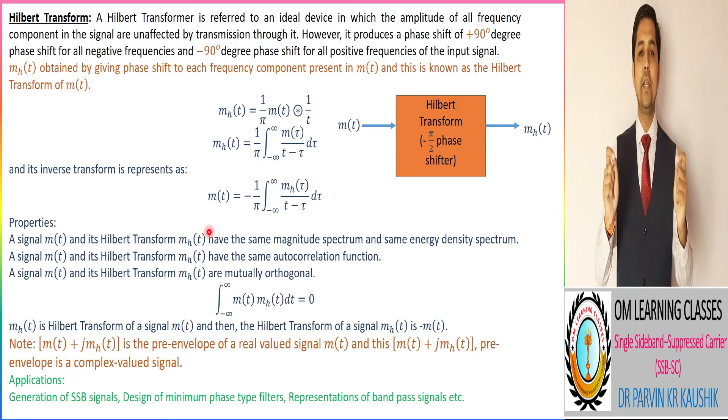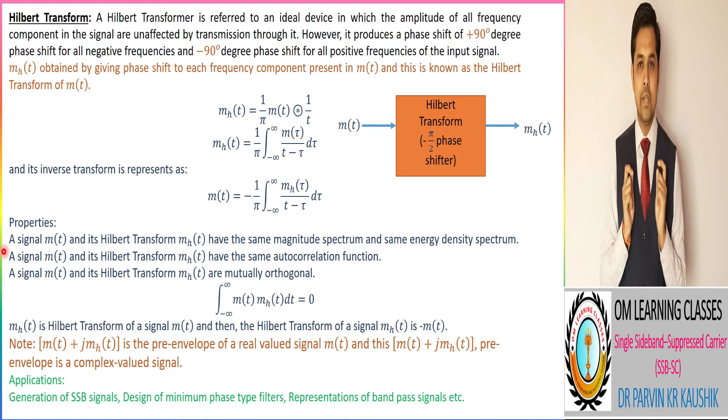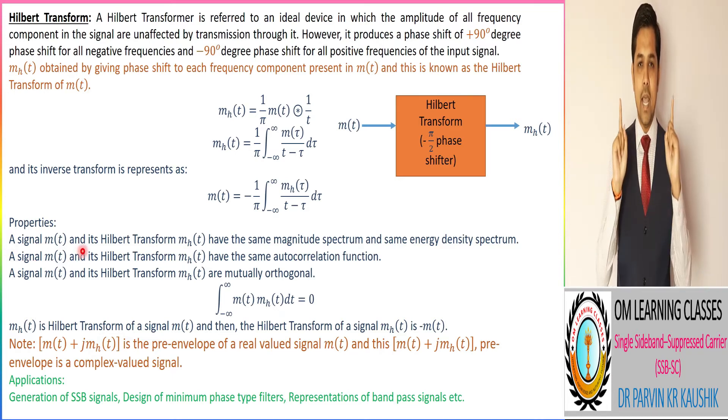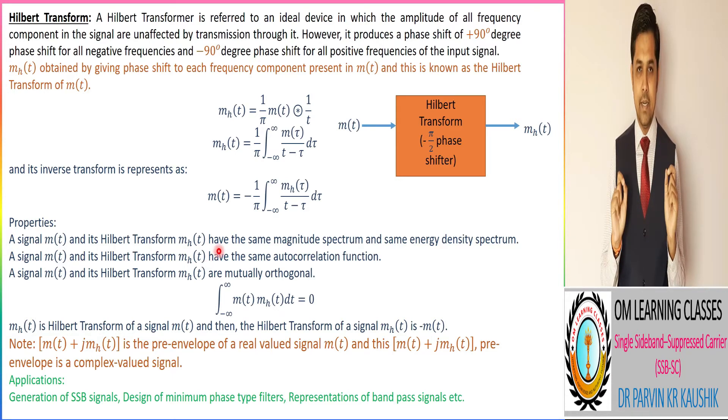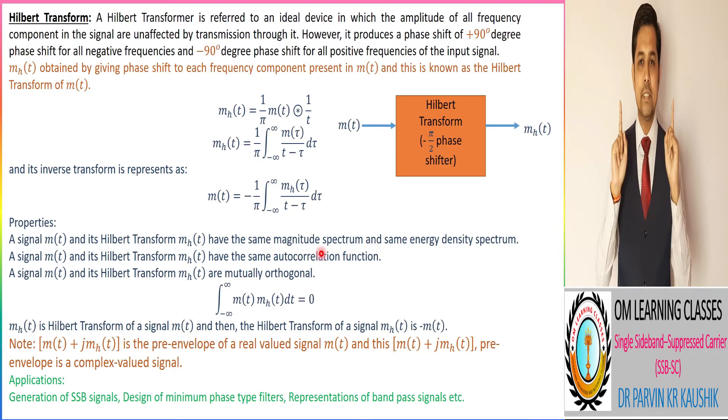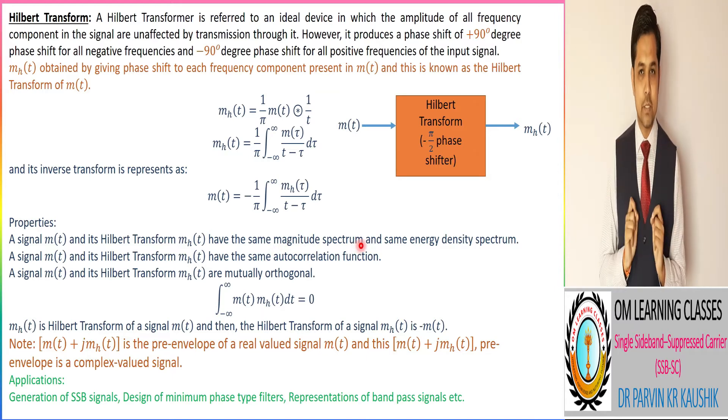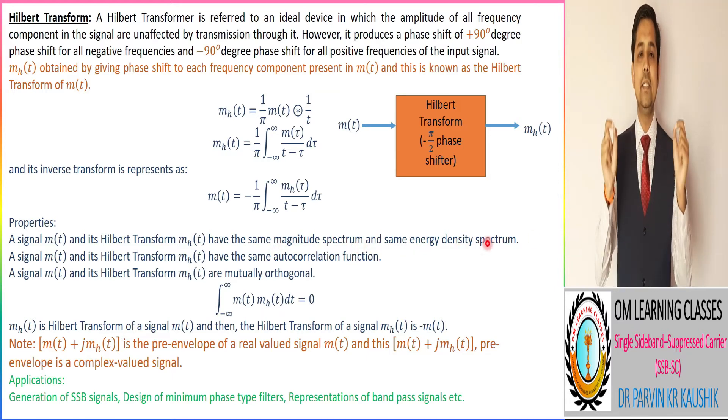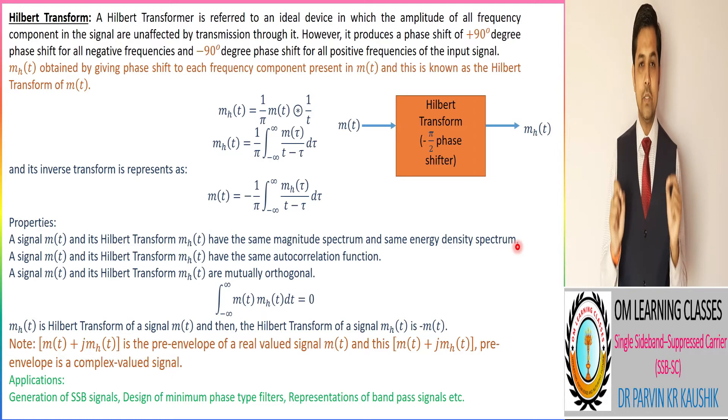Now we take the property of Hilbert transform. The first property: the MHD signal and its Hilbert transform have the same magnitude spectrum and same energy density spectrum. Both MHD and MHD have the same autocorrelation function.